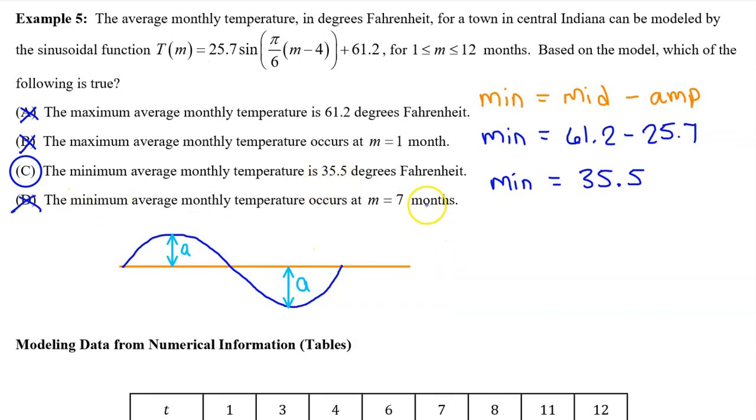Just for the sake of completeness, we know the answer is not D because we already saw that the minimum average monthly temperature occurred at m = 1 month, so it won't be at m = 7. In fact, 7 minus 4 is 3. So at m = 7, this part of the function will become the sine of 3π/6. This reduces to π/2, and the sine of π/2 is 1. This is the maximum value that sine can ever be. So we will have the maximum average monthly temperature at m = 7, not the minimum.